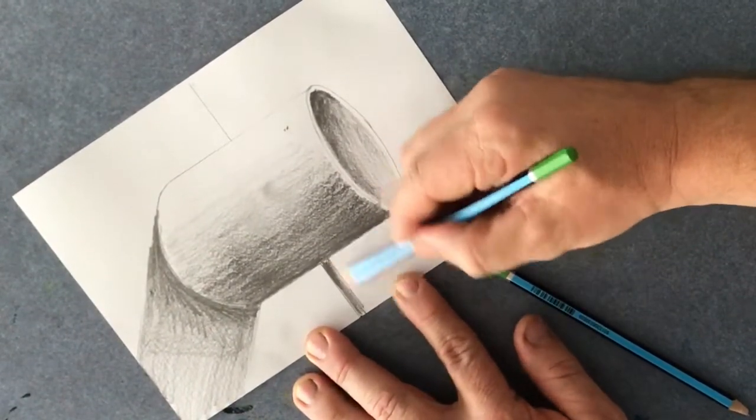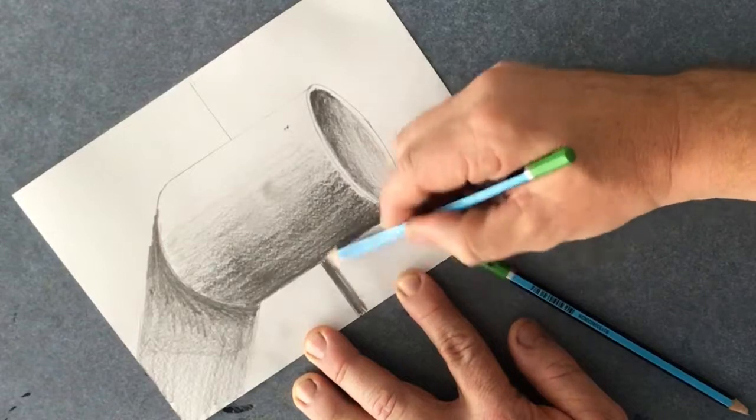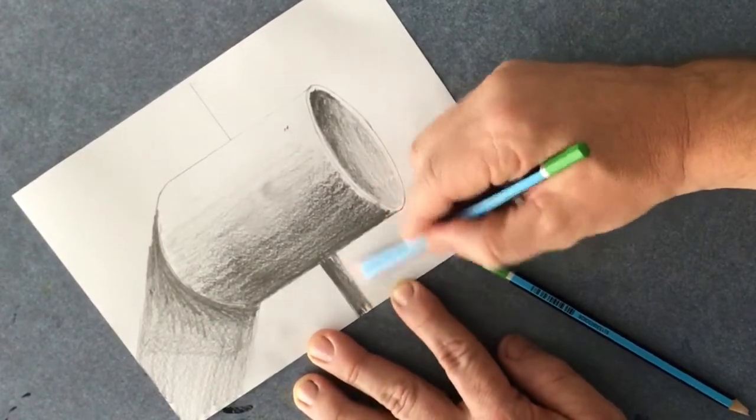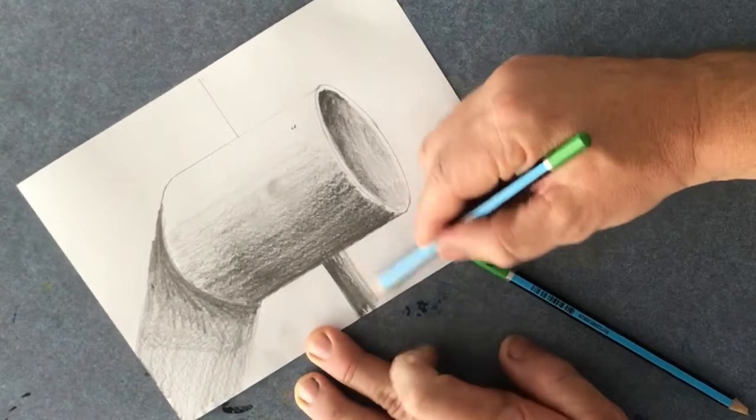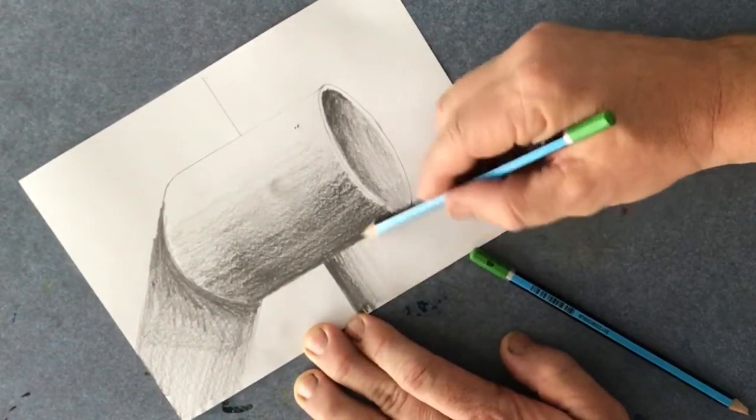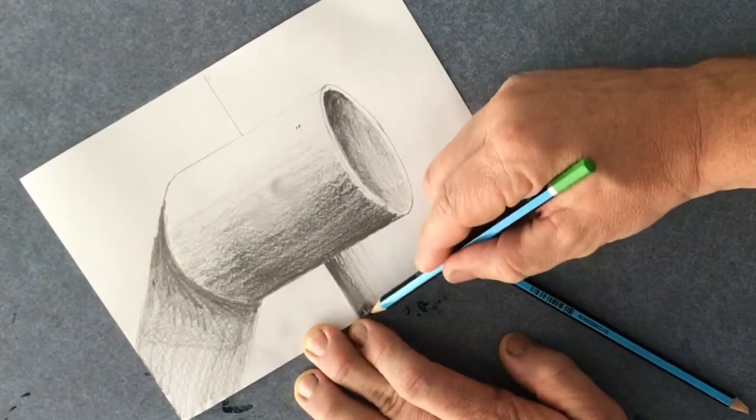Put some shading across here as well. I'm using a 2B pencil because a 2B you can get some good effect with that. I can shade that up as high as we want to go.